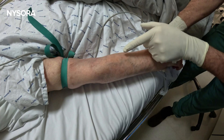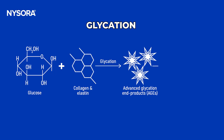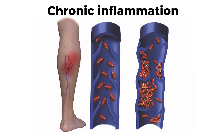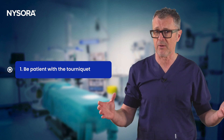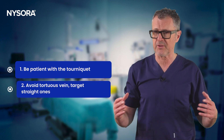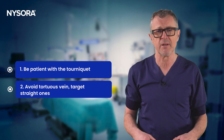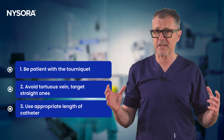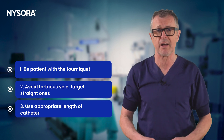Let's quickly recap what we've covered today. Number one, understand the challenge: diabetic patients have fragile veins due to glycation, endothelial dysfunction, and chronic inflammation. Number two, key strategies: apply the tourniquet patiently to allow veins to fill; avoid tortuous thin-walled veins and target straighter veins with tributaries; and choose the appropriate catheter length, reserving longer ones for deeper or ultrasound-guided access.